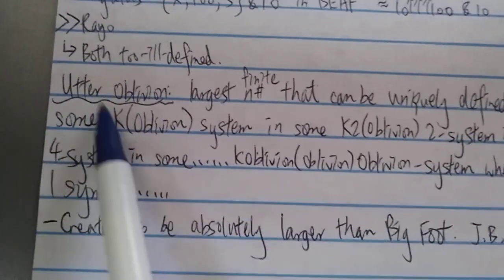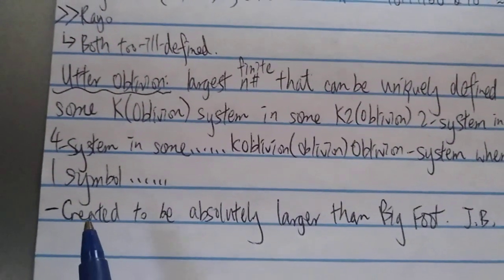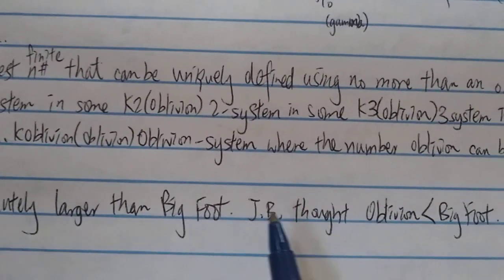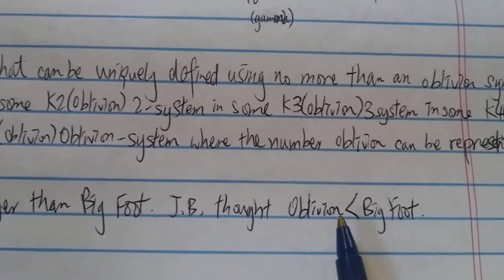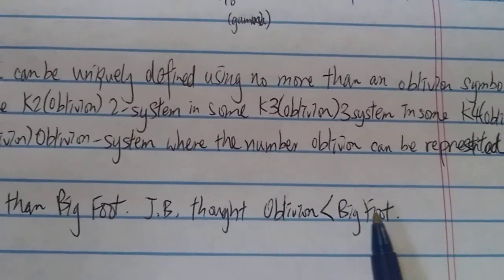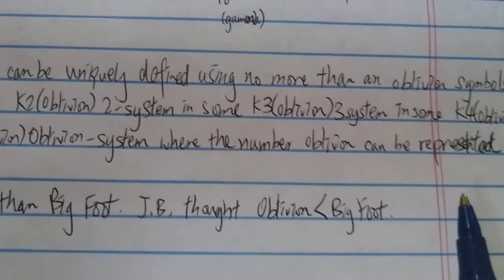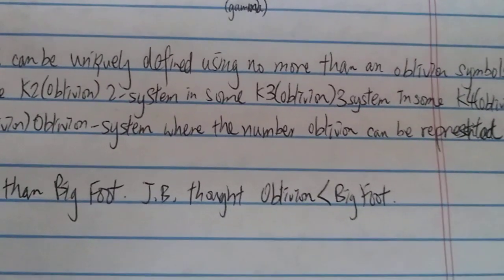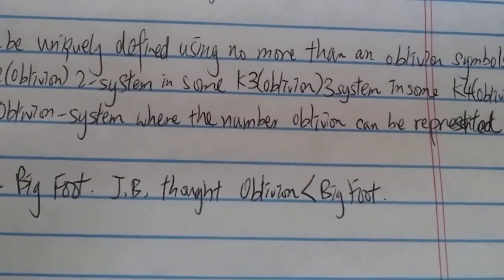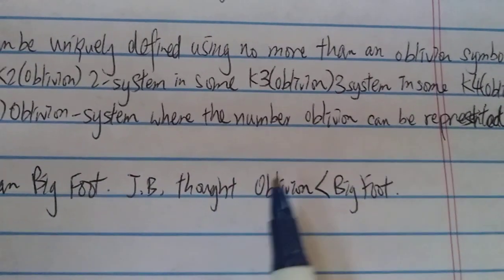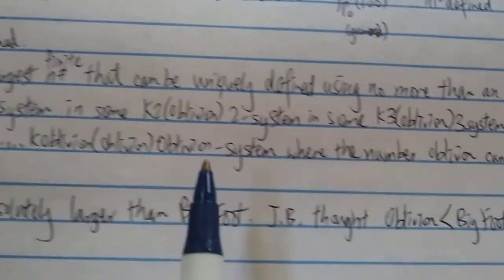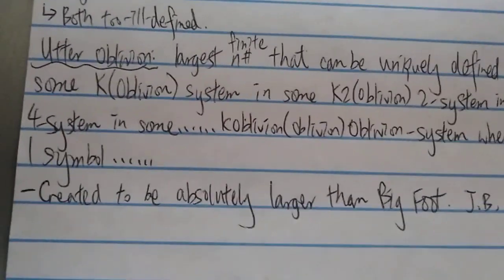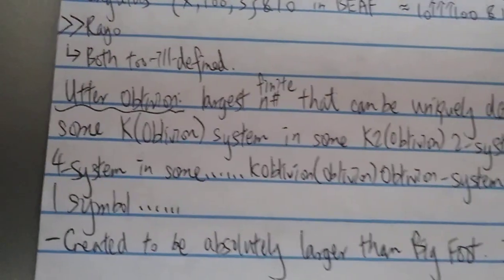The reason why he created the utter oblivion is that he wanted to create a number to be absolutely larger than Bigfoot, because he thought that oblivion is smaller - I mean there's a chance that oblivion is smaller than Bigfoot by some kind of loophole or, because he wasn't quite sure what Bigfoot means by the 10 in it. And there's a chance that Bigfoot could be bigger than oblivion, therefore he created this number to be absolutely larger than Bigfoot. He just wanted to win, I think that's the reason he created this number.